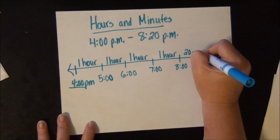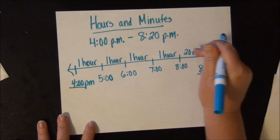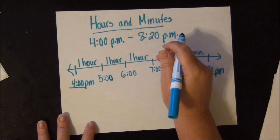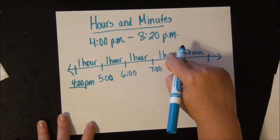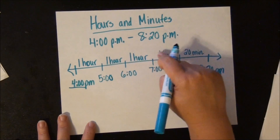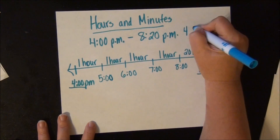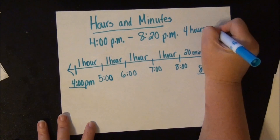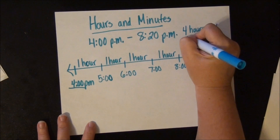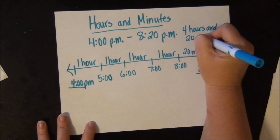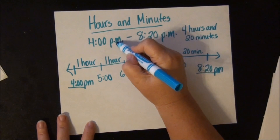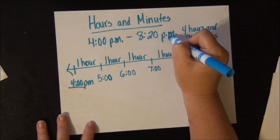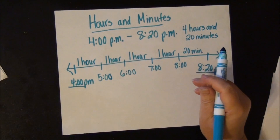Hours and minutes are different, so you can't just add them together — you can't say 20 plus 1 plus 1 plus 1 plus 1. You have to count up your hours: 1, 2, 3, 4 hours, and then you have 20 minutes. So 4 o'clock p.m. to 8:20 p.m. is 4 hours and 20 minutes.